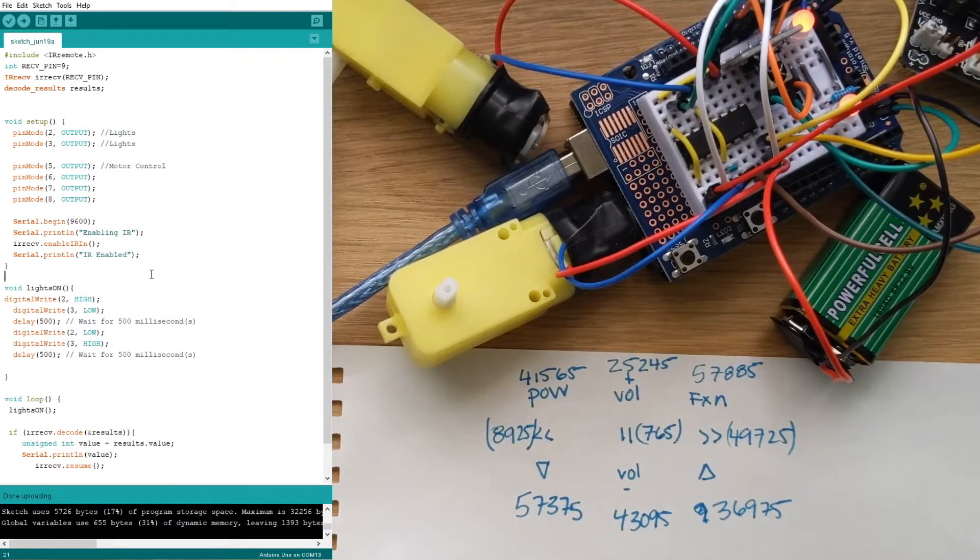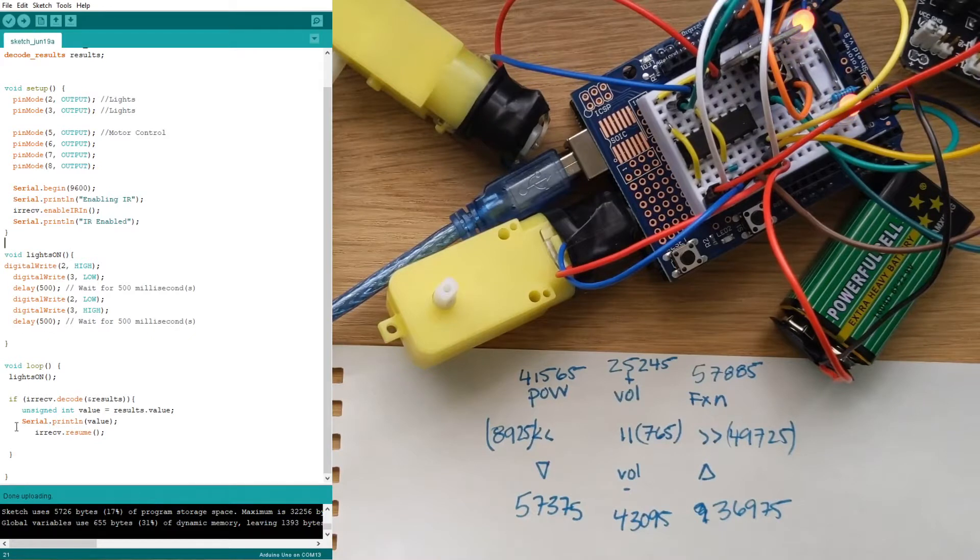Over in our Arduino IDE we have a little bit of code that we used to see what was going on with our IR and that gave us the codes that we have. Now we're gonna do something with that code and that is we're gonna make cases.